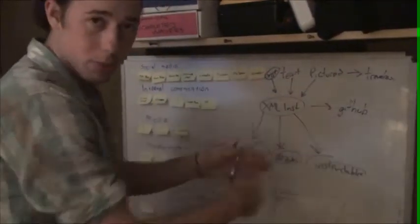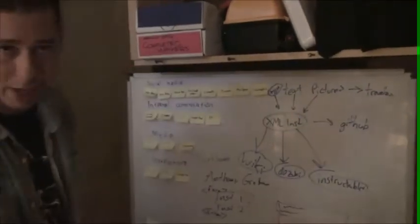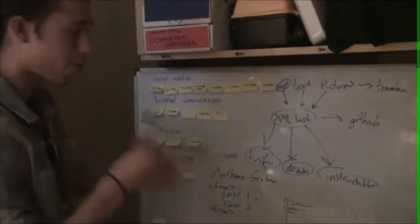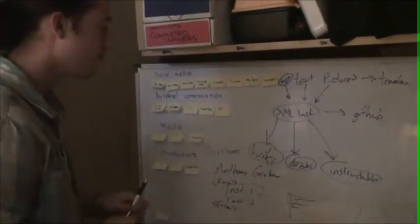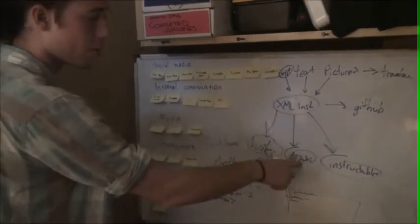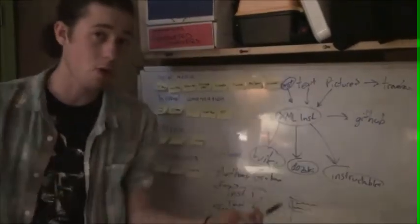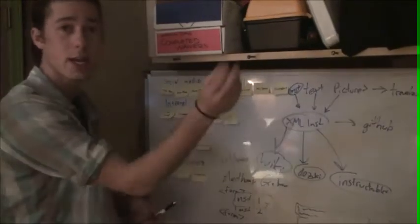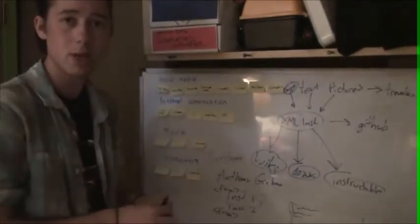So, we make scripts that automate the process of deploying this information. From the text file, we have a web bot, an automated program, that formats this for the wiki, for Dozuki, for Instructables, maybe for our own website. This can change down the line. It doesn't matter because our content is shared and everyone's on board with it.